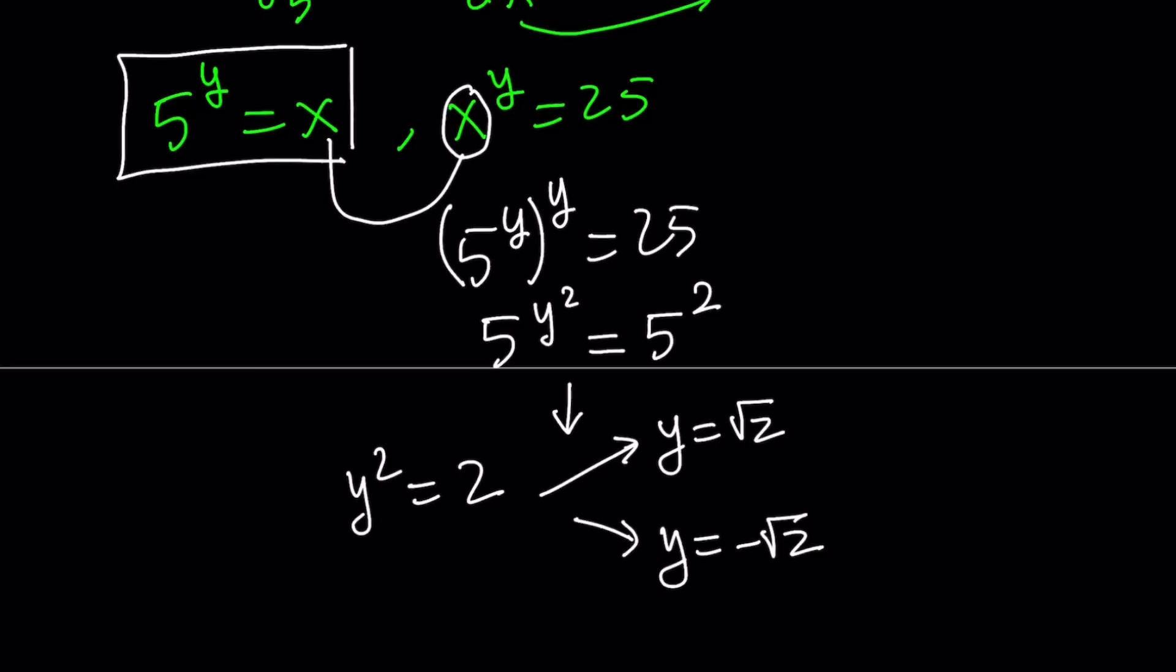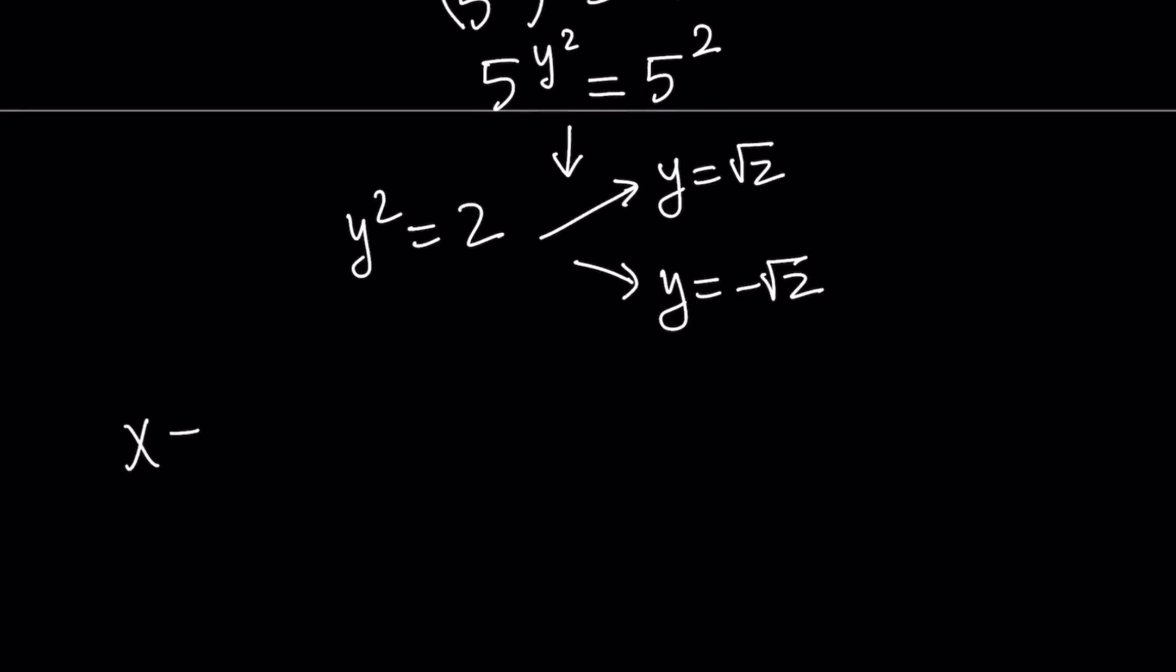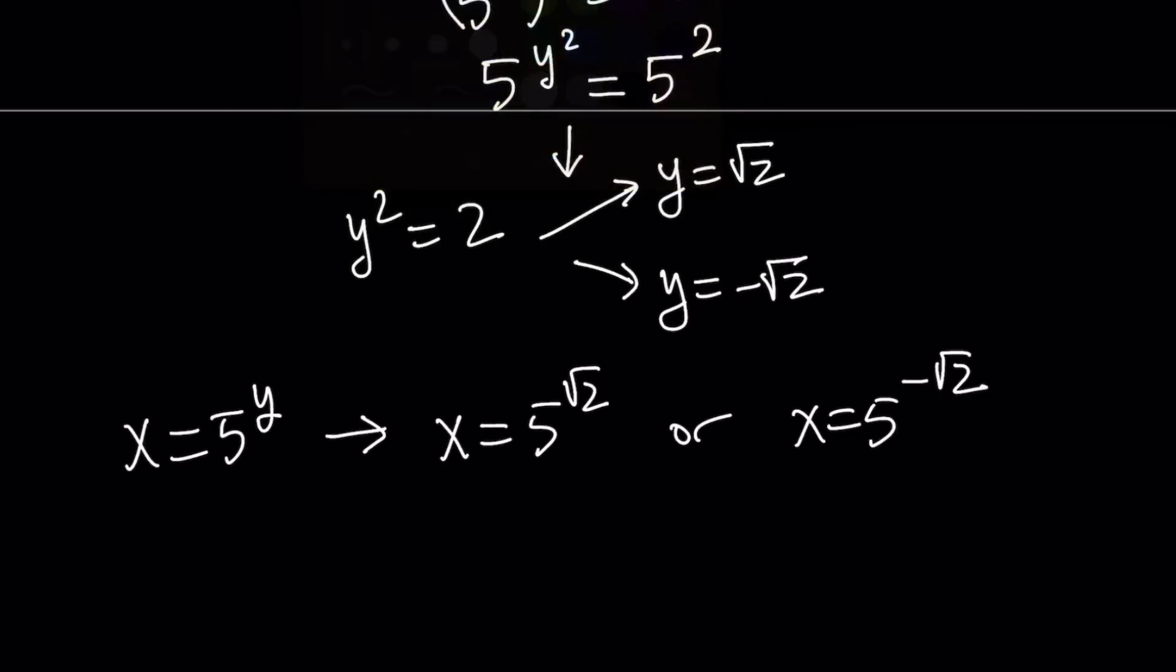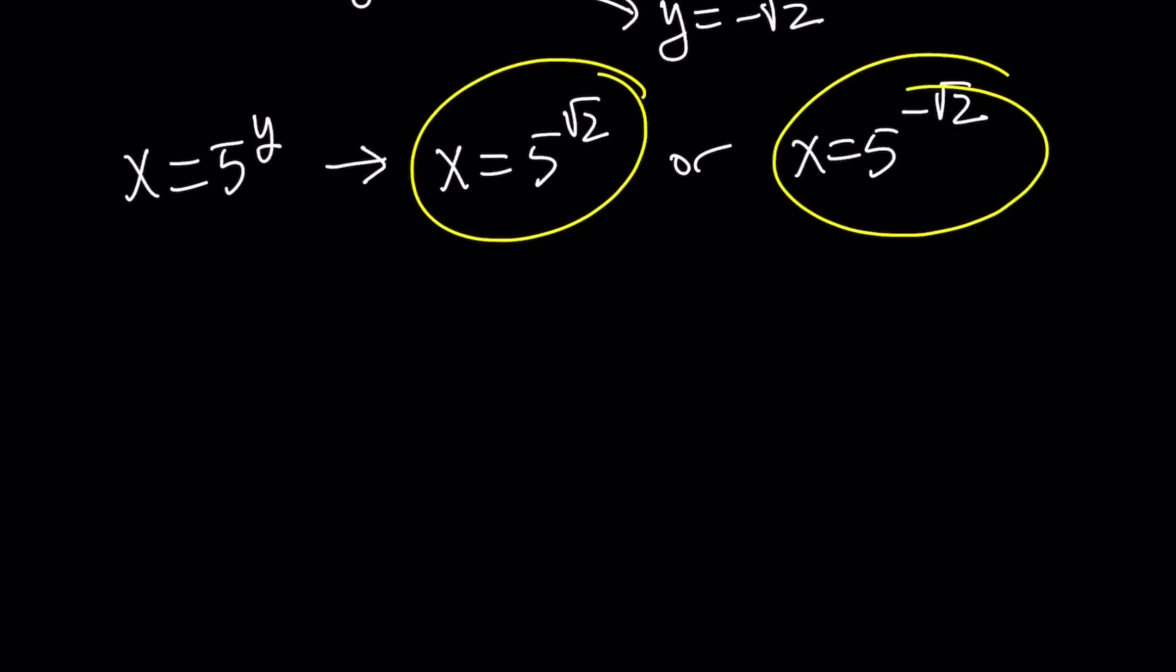So how do you find x? We know that x and y are related by this equation: 5 to the power y equals x. So x is the same as 5 to the power y. So if y is equal to square root of 2, then x is either 5 to the power square root of 2 or x is 5 to the power negative square root of 2. Basically, there are two solutions to this equation. Let's go ahead and talk about the second method.